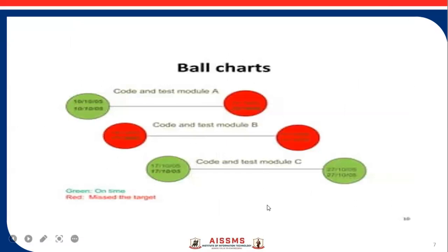You can see here the example ball chart. This is the 'code and test model A', with the timeline given. If it is going to miss the timeline, it will be colored red. This is the example of a ball chart.